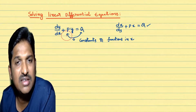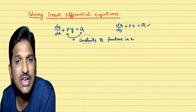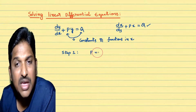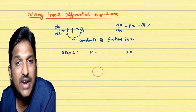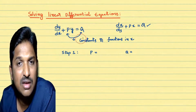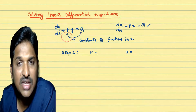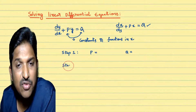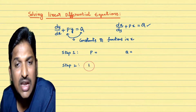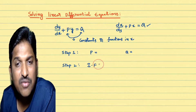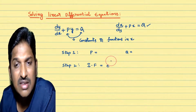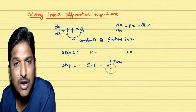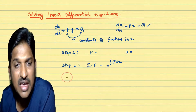Once you identify it is a linear differential equation, how do you solve it? Step 1: identify what is p and what is q. Step 2: calculate the integrating factor. The formula to calculate the integrating factor is e to the power of the integral of p dx. We calculate the integrating factor using this formula.